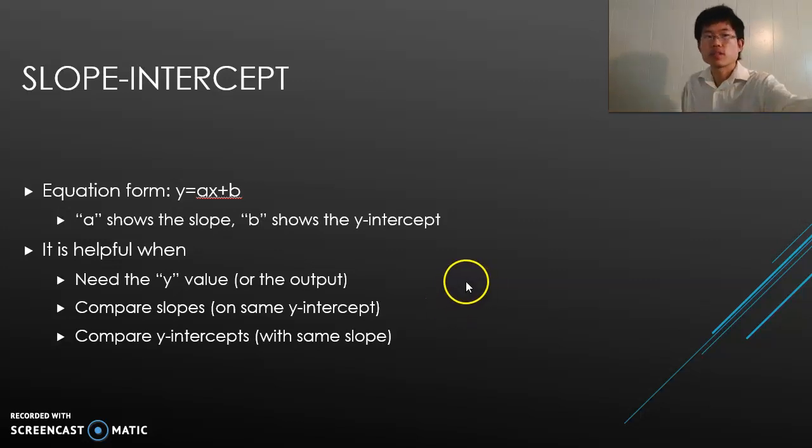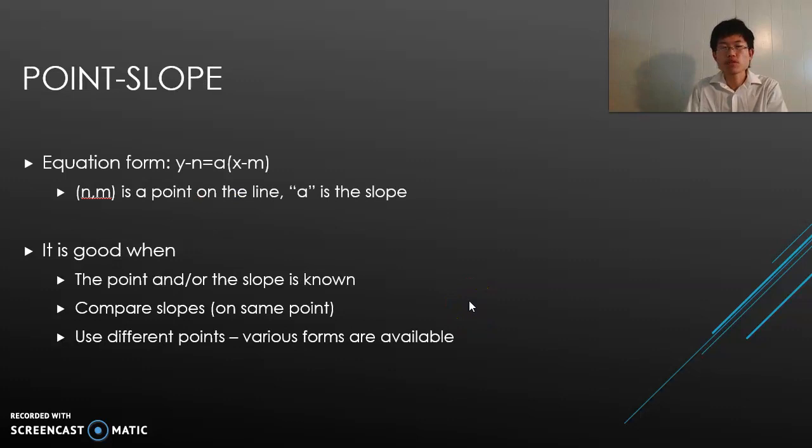Point-slope form is the next one. It's in the form of y minus n equals a times, in parentheses, x minus m. (m, n) is the point on the line and the a is the slope again.